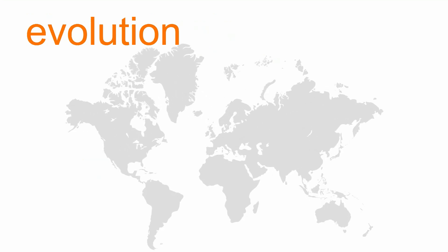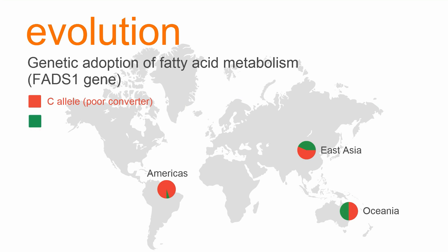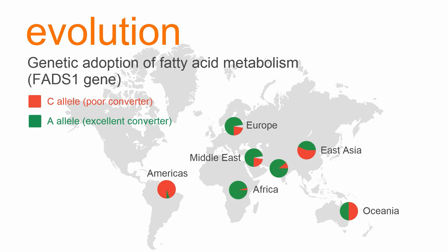Studies on population genetics have shown that the frequency of FADS1 gene variations differ across geographic regions and ethnic groups. The C allele is predominant in Native American populations and prevalent in East Asia and Oceania, while the A allele is most common in people with African ancestry and also prevalent in people with European ancestry. This distribution may reflect genetic adaptation to the unique food environments, selection pressures, and cultural and culinary practices in these regions.